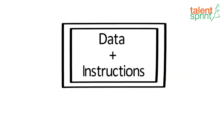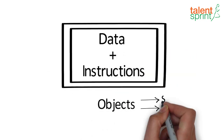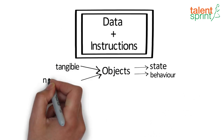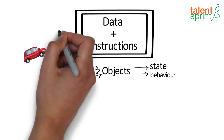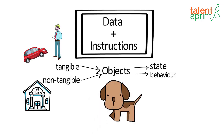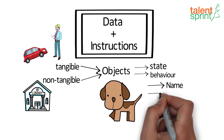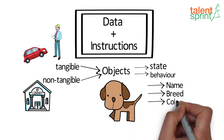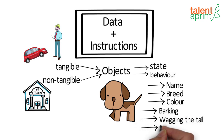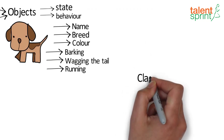Java combines the data and instructions into objects which have a state and behavior. In Java, you can represent any tangible or non-tangible real world entity as an object — for example, cars, humans, library system, etc. If we consider a dog, then all its physical properties define the state of the object, like name, breed, and color. And the things that it can do become the behavior of the object, like barking, wagging the tail, and running.